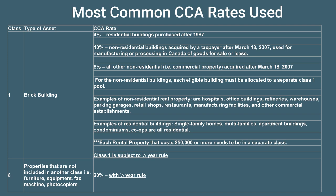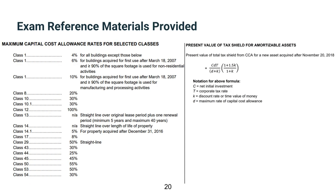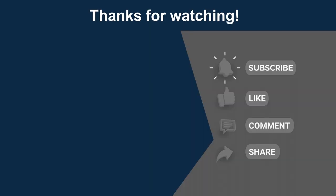Remember, on your exam you don't actually get the descriptions of what the assets are — all you get is the class and the rate, so that's something you need to memorize yourself. On the actual exam you just get the class number, their rate, and also the present value of the tax shield for amortizable assets.